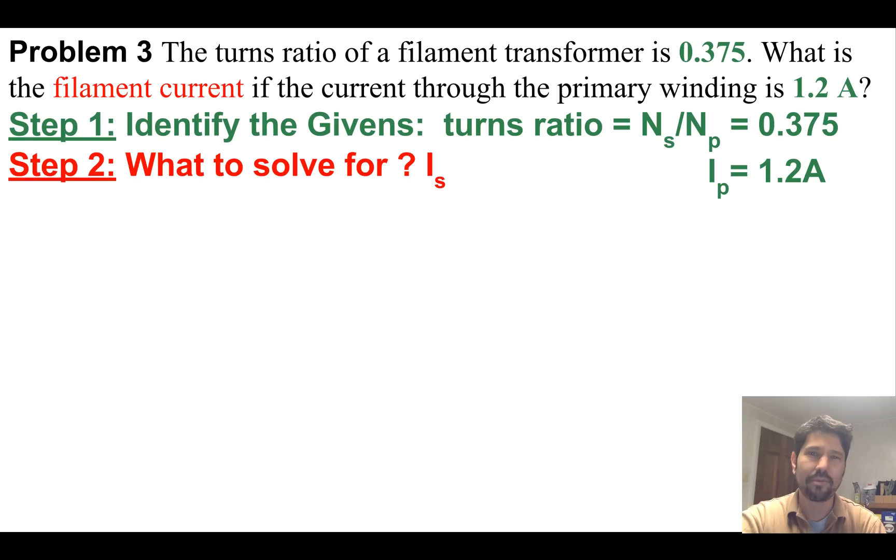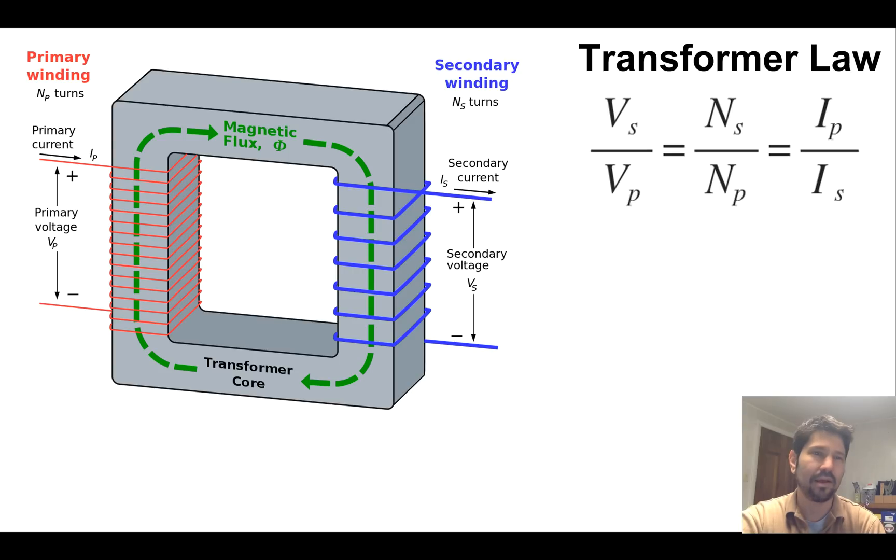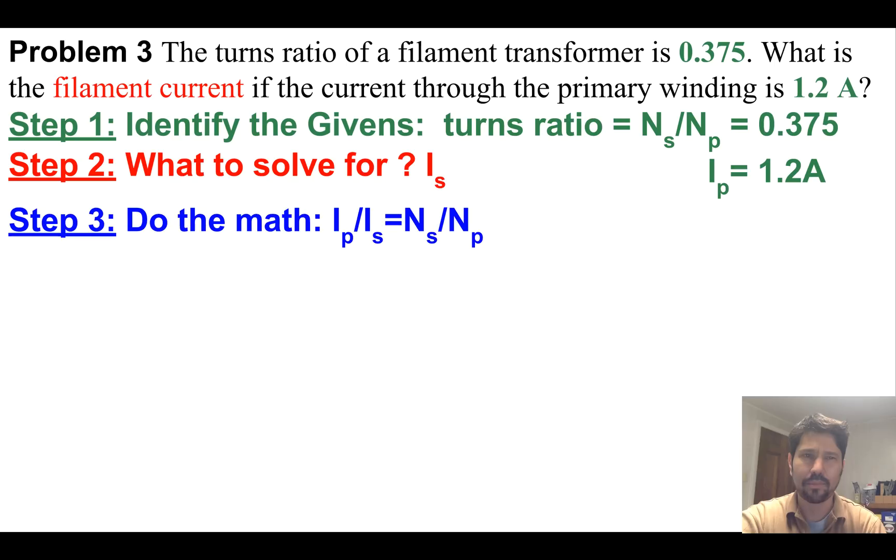What am I solving for? The secondary current. I need the formula with currents. P over S, S over P—with currents it's flipped. Primary over secondary current equals turns secondary over turns primary. I'll do the algebra before I plug in any numbers.